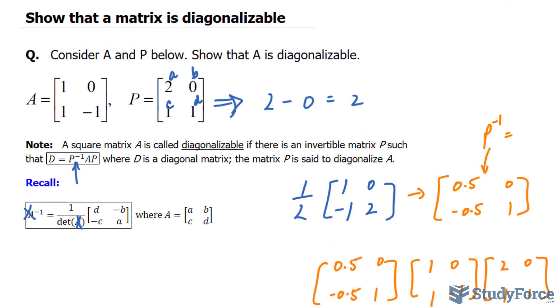Ultimately, what this tells us is that A is diagonalizable. And there you have it. A quick tutorial on how to show that a matrix is diagonalizable.